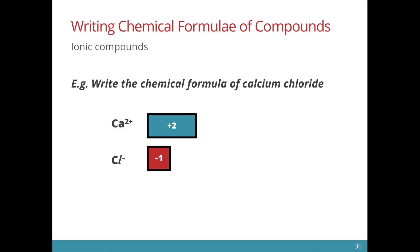Notice if calcium and chloride were to form in a one-to-one ratio, the charges would not balance because calcium is plus two and chloride is minus one. In order for it to be neutral, we need two chloride ions for every calcium ion. This means the formula would be CaCl2. The subscript two tells us that there are two chloride ions present in the formula.